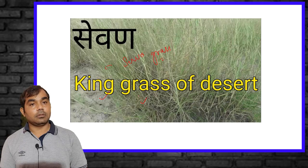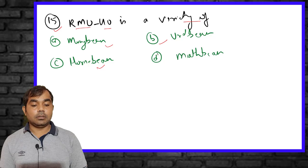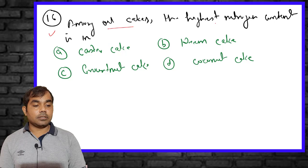The fifteenth MCQ asks: RMO 40 is a variety of which crop — mung bean, urd bean, or moth bean? The right answer is moth bean. Moth bean is scientifically known as Vigna acontifolia.